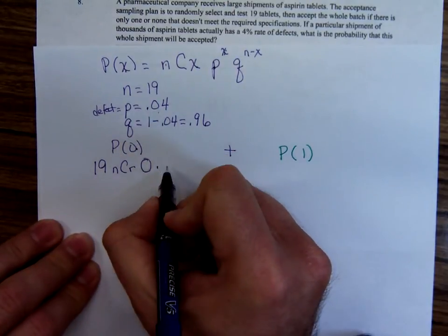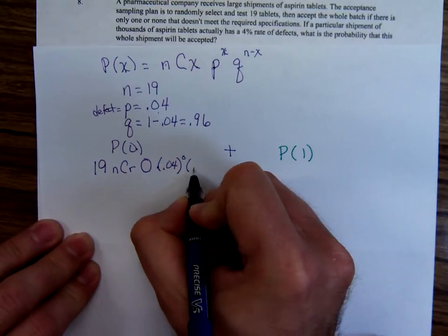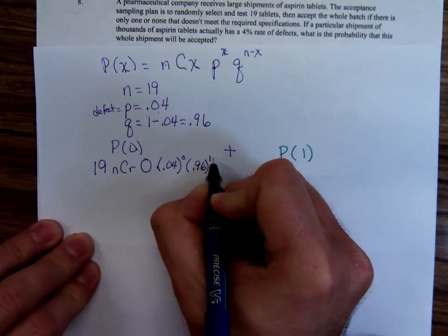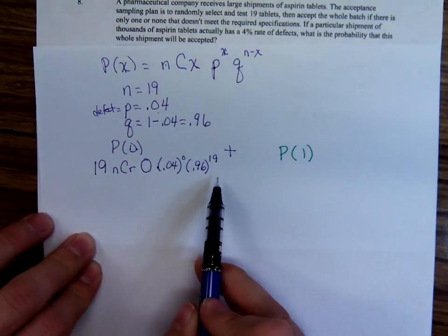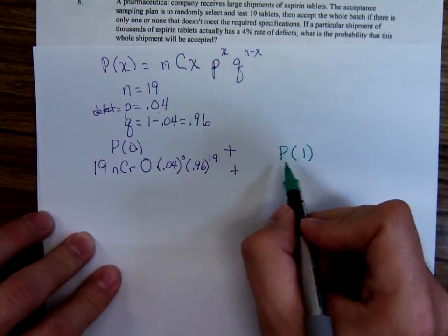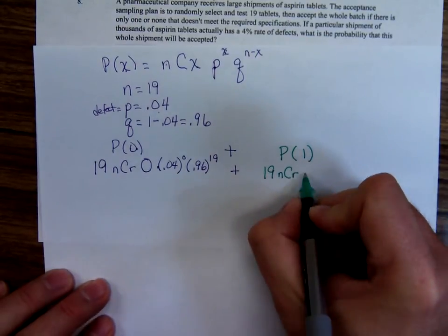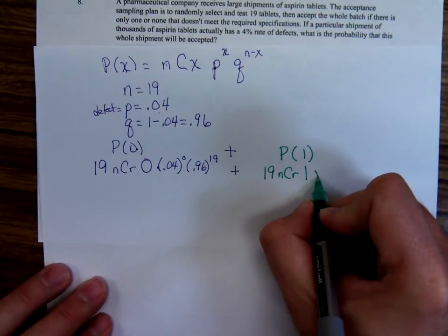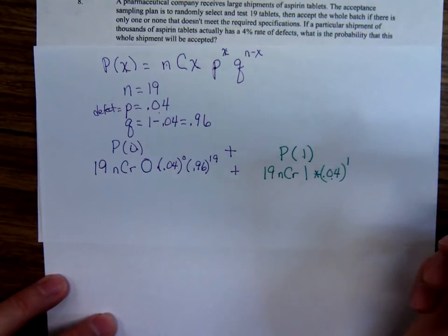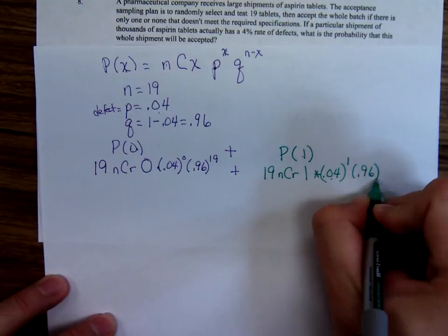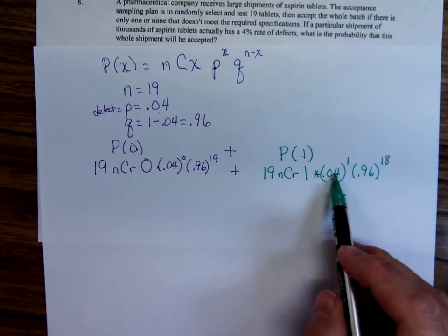Times P, 0.04, to the X, X is 0. Q to the N minus X, 19 minus 0, 19. So we're going to have to punch all of that into our calculator. Plus, do the same thing with the probability of 1. That would be 19 NCR 1 times 0.04. It's the probability of defects raised to the number of defects. The probability of not defective raised to the number of not defective. So there would be one defective aspirin, 18 that aren't.